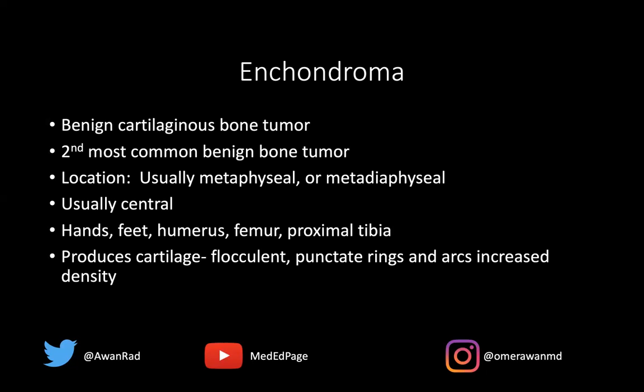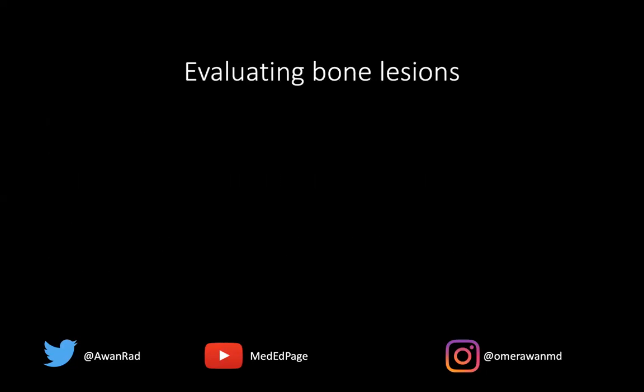These lesions produce cartilage — flocculant, punctate, rings and arcs. That's what we're describing. They have a very characteristic appearance, just like you saw in the index case.